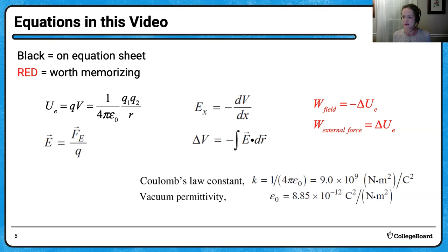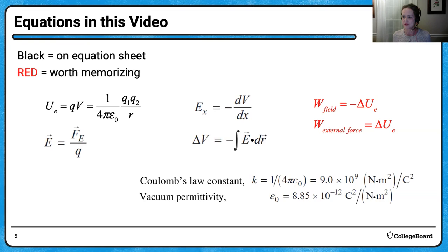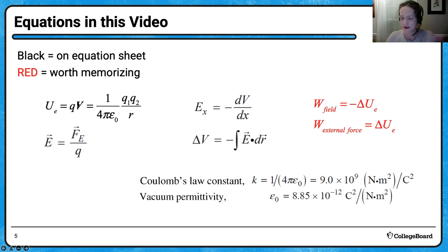So, equations on the equation sheet. The College Board defines electric potential energy related to potential. This charge is a charge placed in a field where we've already defined what the potential is. If it's between two point charges, this is the expression given on the equation sheet. The College Board likes to use 1 over 4π ε₀ rather than k, Coulomb's constant, likely because when we derive these equations we start with Gauss's law and 1 over 4π ε₀ is the constant that appears.